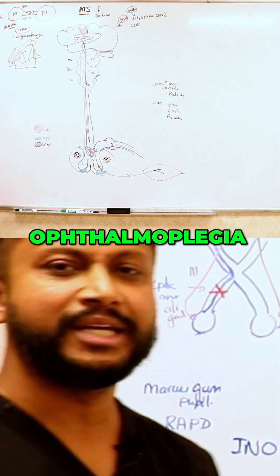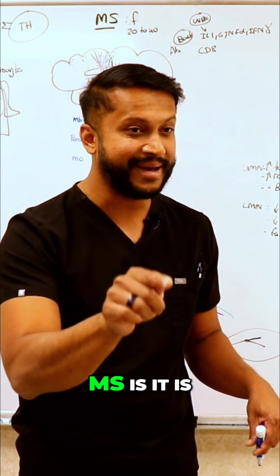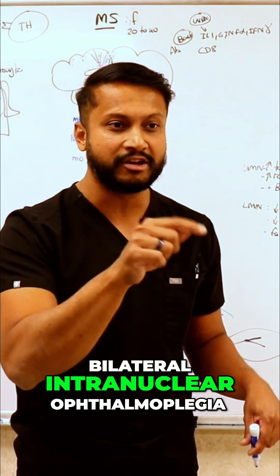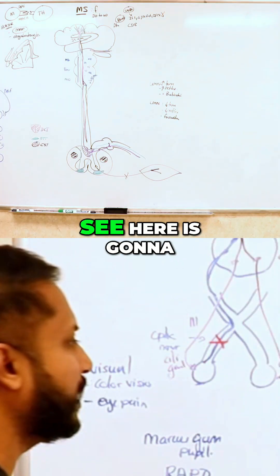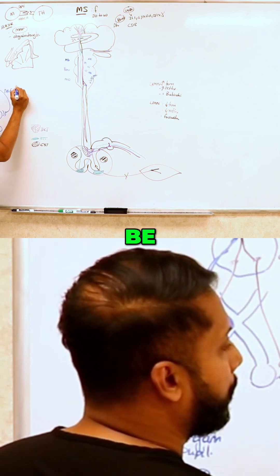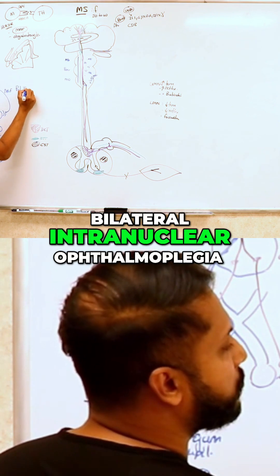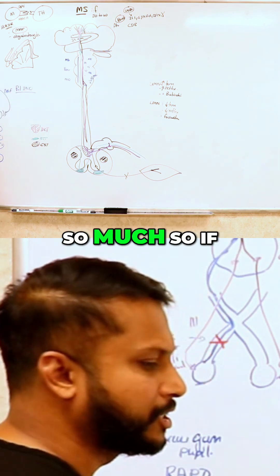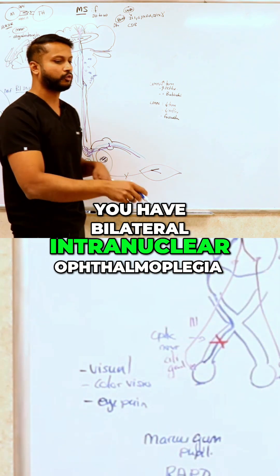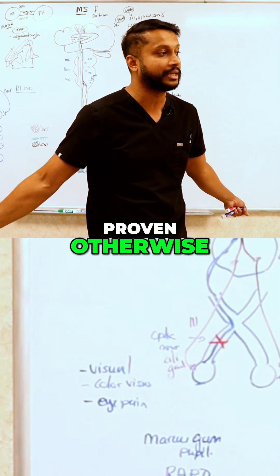But the uniqueness of MS is bilateral intranuclear ophthalmoplegia. What you would see here is bilateral INO. So much so that if you have bilateral intranuclear ophthalmoplegia, it is MS unless proven otherwise.